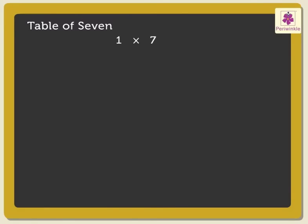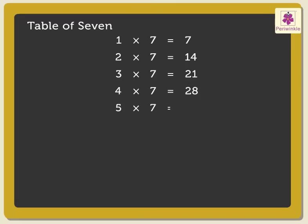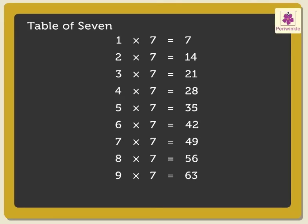Next is the table of 7. 1 seven is 7. 2 sevens are 14. 3 sevens are 21. 4 sevens are 28. 5 sevens are 35. 6 sevens are 42. 7 sevens are 49. 8 sevens are 56. 9 sevens are 63. 10 sevens are 70.